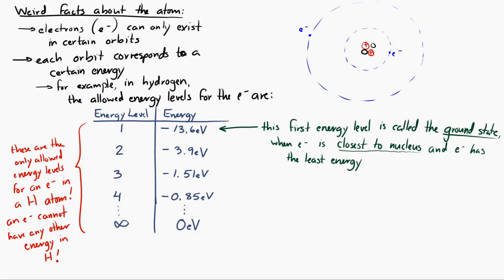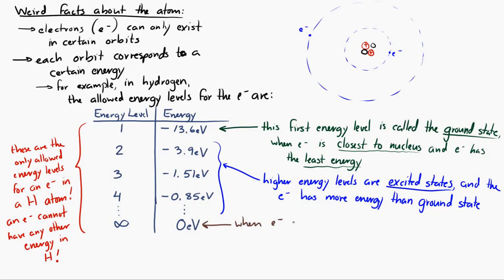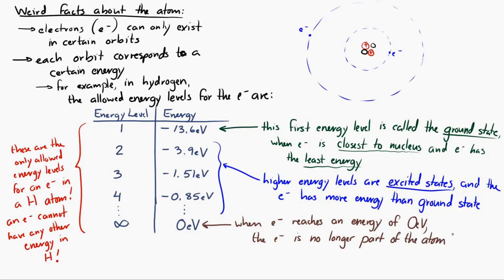The higher energy levels are called excited states, and they always have more energy than the ground state. When you go up and up to higher and higher energy levels and eventually reach the infinity energy level, it reaches an energy of zero electron volts. At that moment, the electron has escaped the atom — it's in an infinitely far away orbit, which means it's no longer part of the atom. When that happens, we say that the atom is ionized — it has lost an electron.